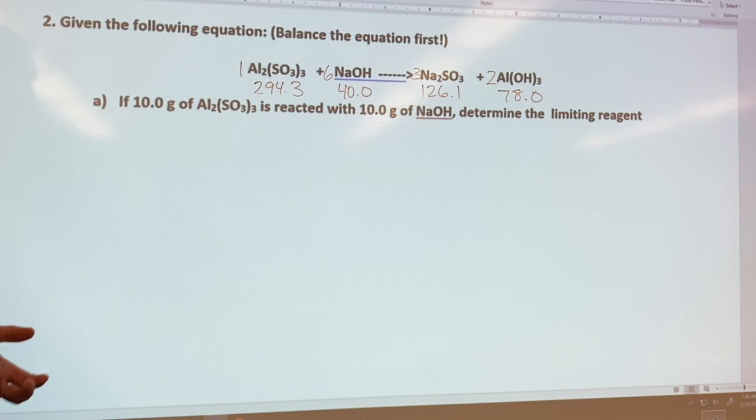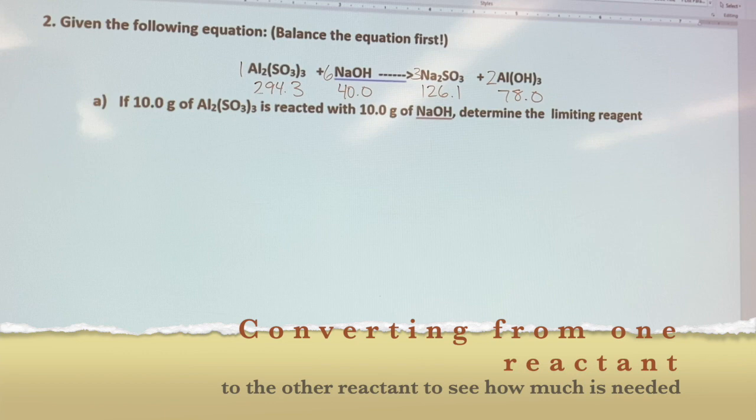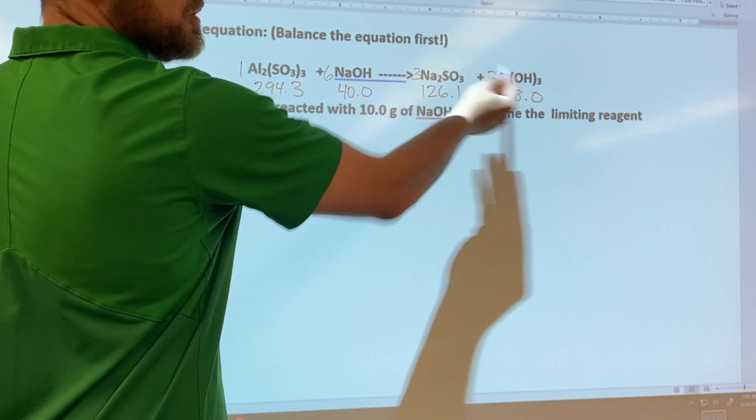All right, the second way we can choose to do a question like this is we can do a little less work but we have to do a little bit more thinking. That way is going from reactant A to reactant B to figure out how much of both reactants we would need.